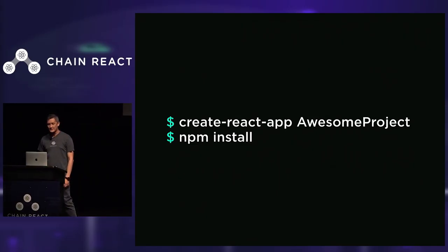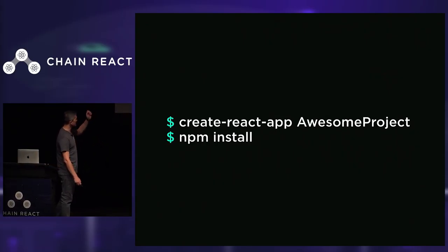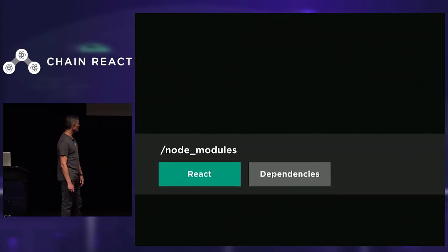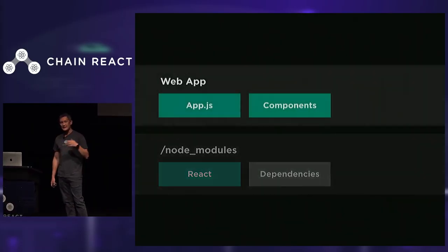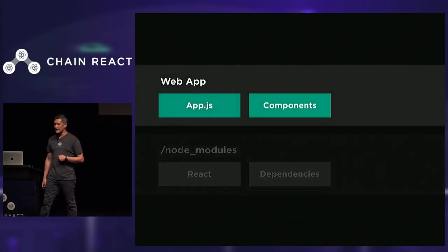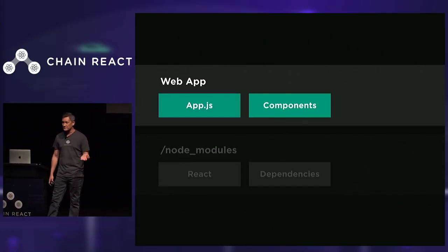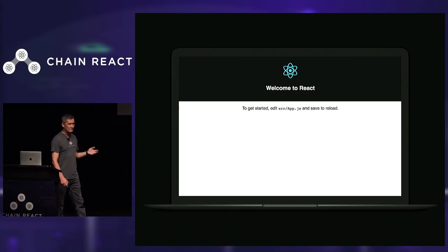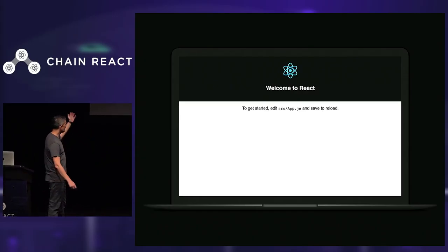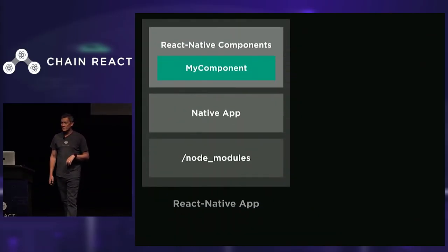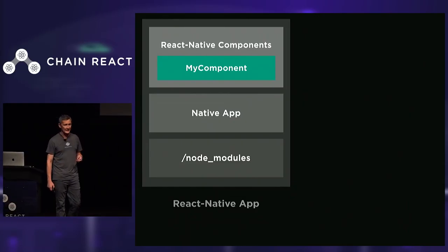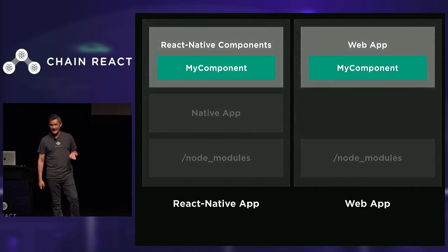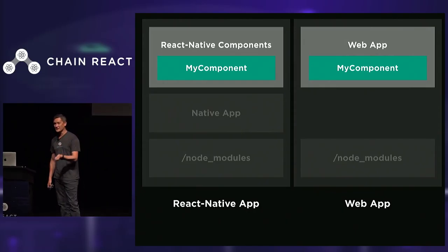Now let's compare that with what happens when you create a new React.js web app. We do create-react-app, run npm install, and again we have our node_modules folder with our React module. Instead of a native app on top, now we have the bones of a web app — this is where all your platform-specific web components are going to live. When we compare the architecture of our React Native app with our React.js web app, we see that at the application layer we have two different sets of implementations on two different platforms.